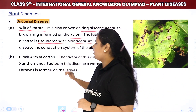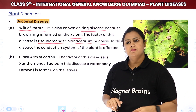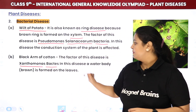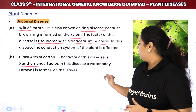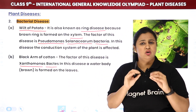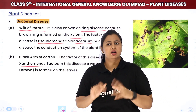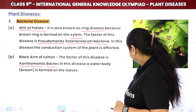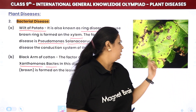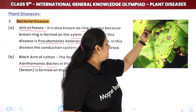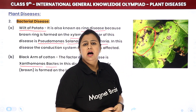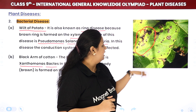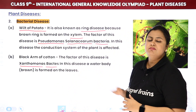Now let's talk about Black Arm of Cotton, which is again a bacterial disease caused by Xanthomonas bacteria. Water-soaked bodies form on the leaves. You can sometimes see this in your home garden — it is actually a bacterial infection. If not treated, plants cannot sustain.